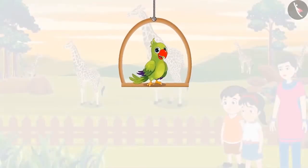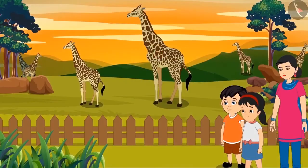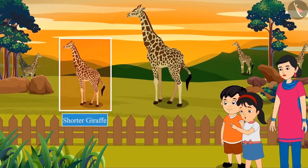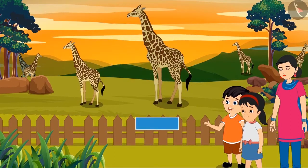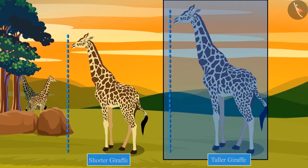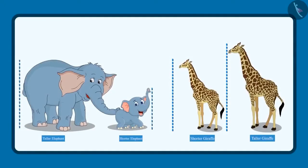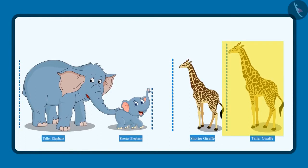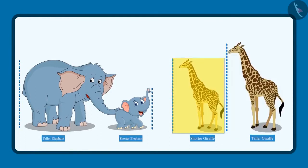After this, Chotu, Pinky and their mother saw some giraffes. Mummy, how short this giraffe is. And this giraffe is taller than this one. Yes children, out of these two giraffes, this is shorter and this one is taller. So children, did you see how Chotu and Pinky identified the taller elephant, the shorter elephant and the taller giraffe and the shorter giraffe.